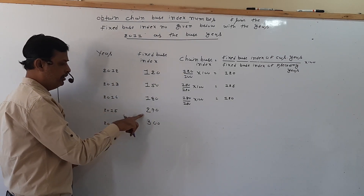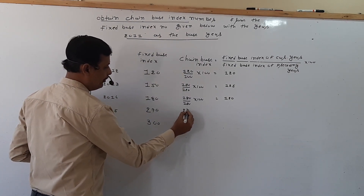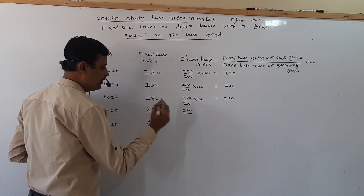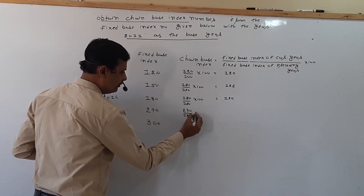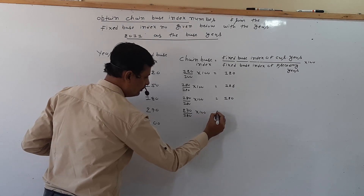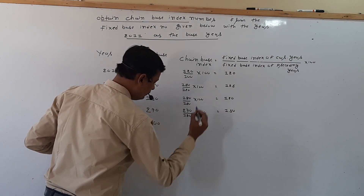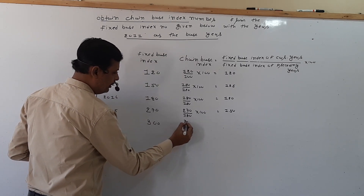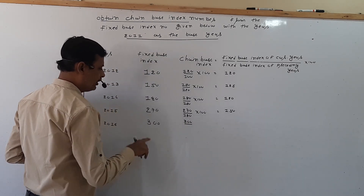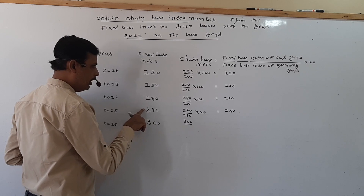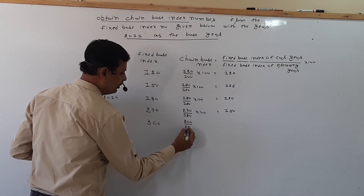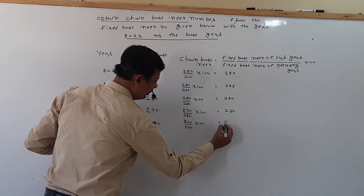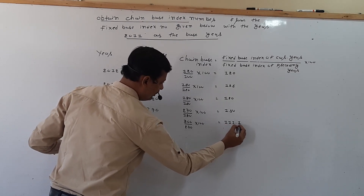In 2015, the current year fixed base is 270, and the preceding year fixed base is 180, into 100, that is 150. In 2016, current year fixed base is 300, upon preceding year 270, into 100, that is 111.11.